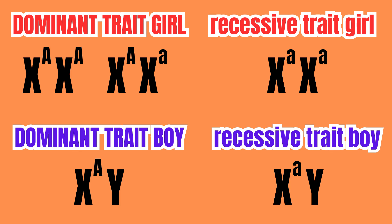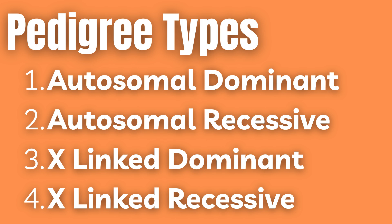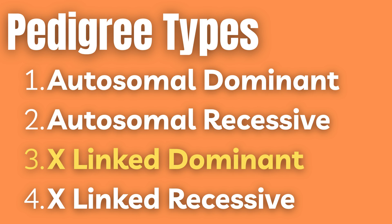As a result of autosomal and X-linked traits, the four most common types of pedigrees include autosomal dominant, autosomal recessive, X-linked dominant, and X-linked recessive.